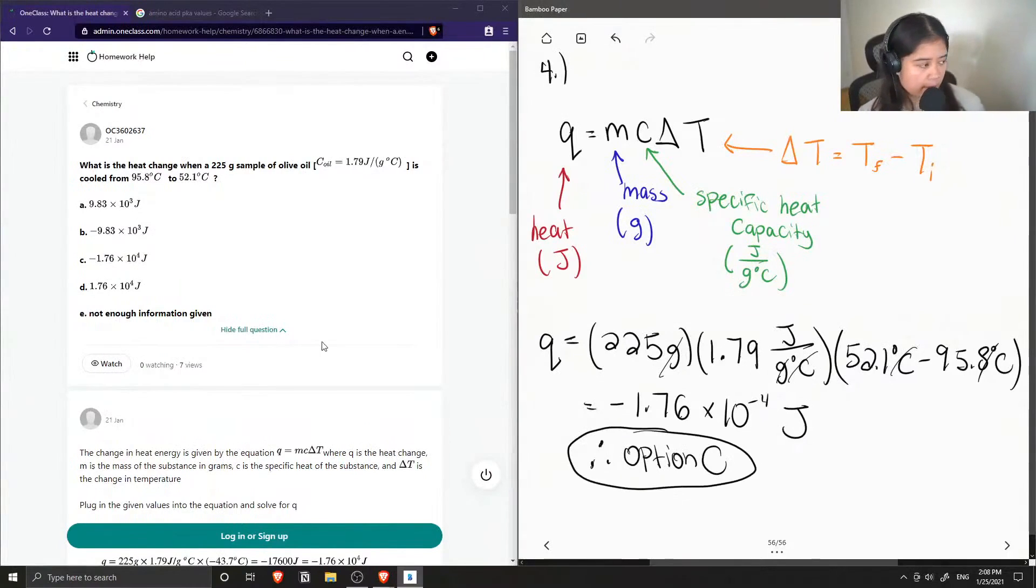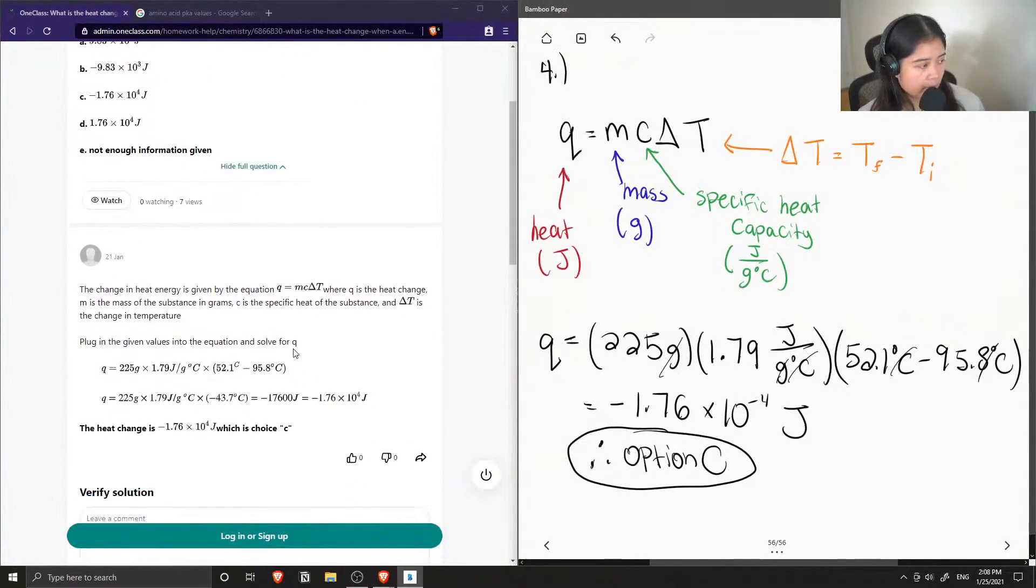Okay, so let's see what the junior tutor said. The heat change in energy is given by the equation Q equals MC delta T.